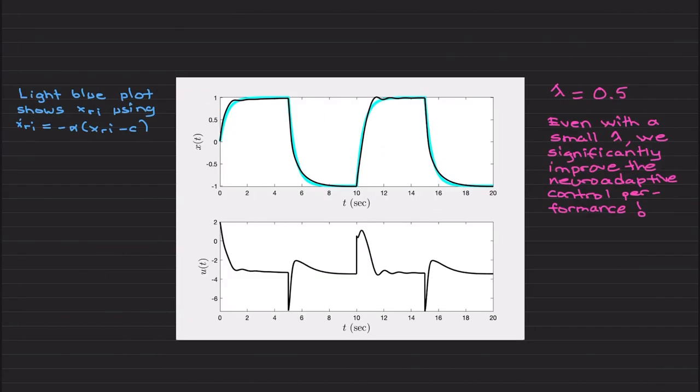Here is the corrective signal's structure that is coming from the previous video. First of all, light blue plot shows the ideal not modified reference model. I just generated this for comparison purposes so that with your eyes you will see we indeed recover the ideal closed-loop system. This plot is for lambda equals 0.5.